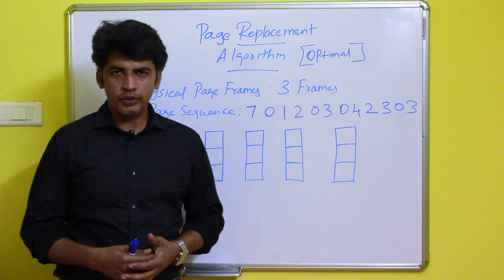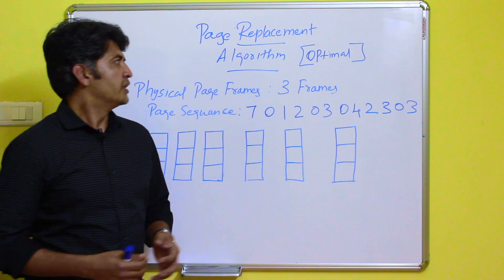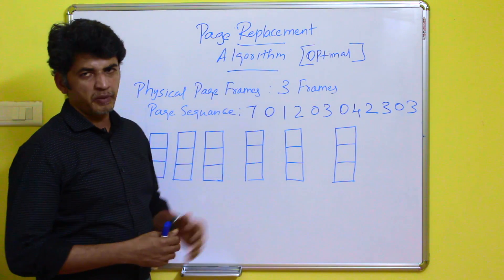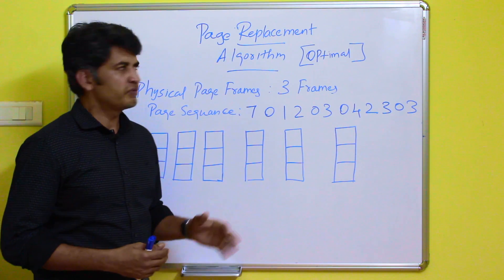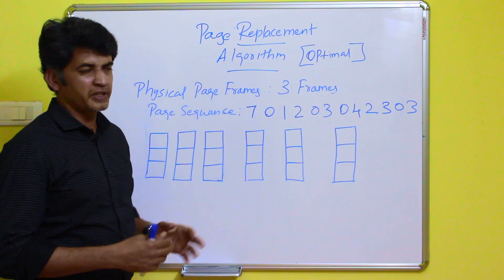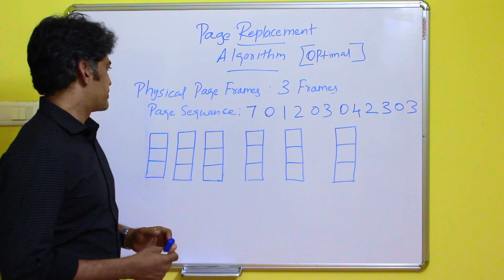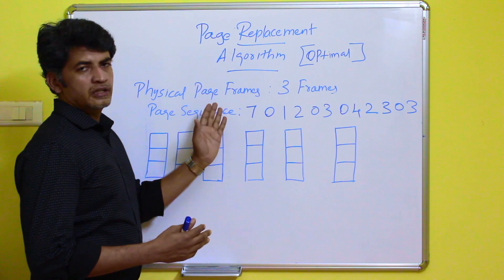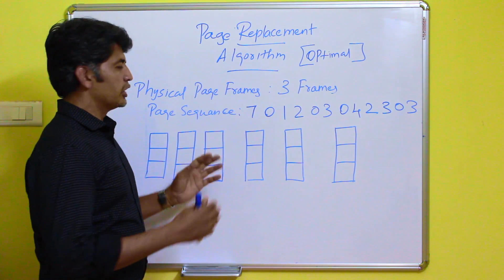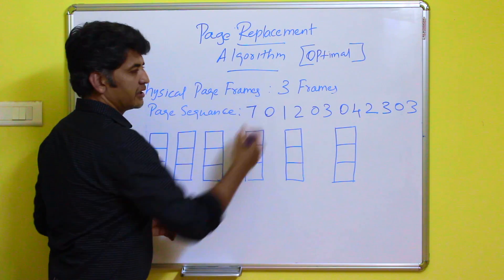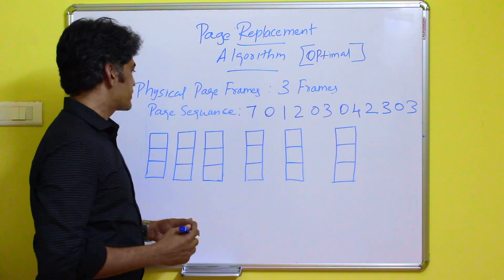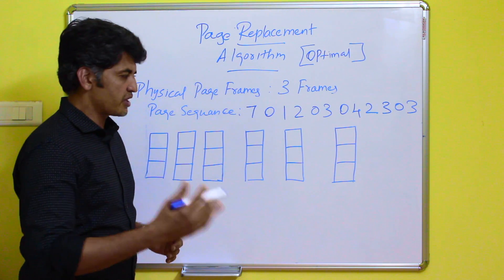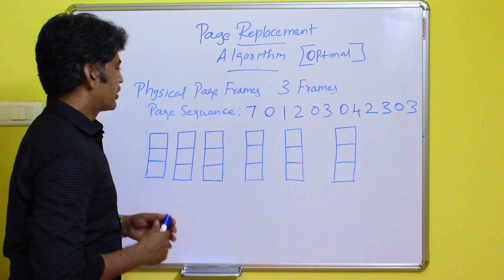In this video we are going to discuss the Optimal Page Replacement Algorithm. This is a continuation of page replacement algorithms. We are again considering physical memory limited to three frames, along with the page sequence for a particular process execution.